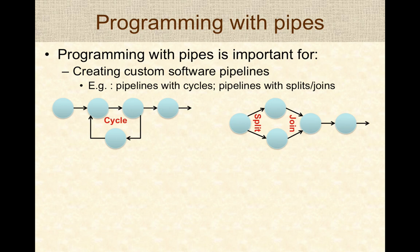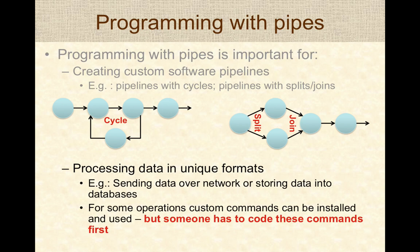Although the bash shell can accomplish a lot of convenient piping, programming with pipes is still important in several cases. First, they enable you to create custom software pipelines — for example, pipelines which have cycles, or where some data is filtered out. You can also create pipes with splits or joins where data flows differently between processes. Additionally, pipelines enable you to include additional data processing in unique formats, such as hijacking input to send data over a network or storing it into databases. You as the programmer would be coding these custom commands used to construct more sophisticated software pipelines.